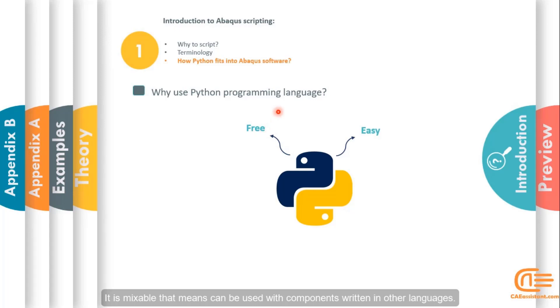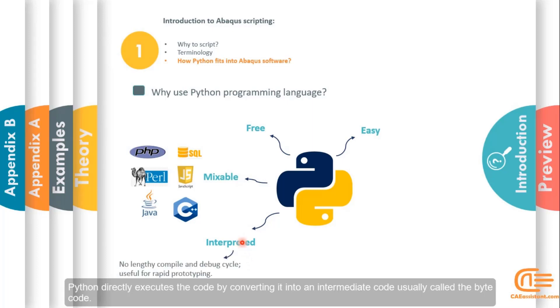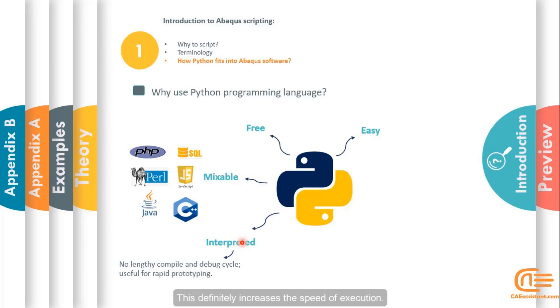It is mixable, meaning it can be used with components written in other languages. It is interpreted not compiled language. It means there is no need for separate stages for compiling the code and then executing it. Python directly executes the code by converting it into an intermediate code usually called bytecode. This definitely increases the speed of execution.